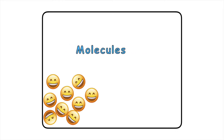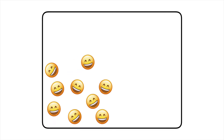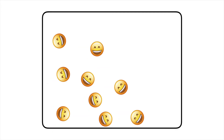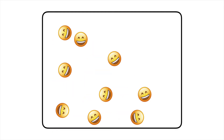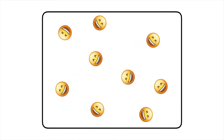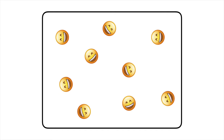Imagine we have a closed container. In this container there are molecules in one corner — in this case, smiley faces. Molecules move and bounce around one another, constantly in all different directions. Naturally, molecules move to less crowded areas as they are pushed around by surrounding molecules.